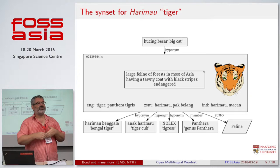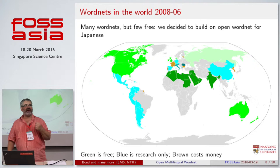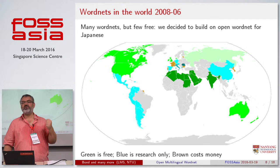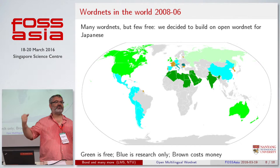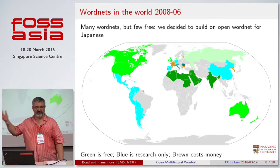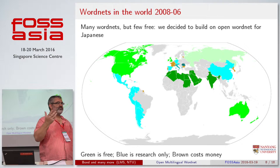People started to make wordnets for other languages — the Euro WordNet project, the Bolka WordNet project, the Asian WordNet project. When I started, I used to work in Japan in the phone company. We wanted to have a better dictionary of Japanese and we thought we'd build a wordnet. Our clever idea was: we have many Japanese dictionaries to other languages — Japanese to French, Japanese to German, Japanese to Malay, Japanese to Spanish. And if we have wordnets for those languages, we can try and build the Japanese wordnet automatically.